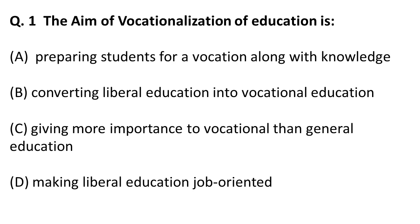The question is: what is the aim of vocationalization of education? When vocational education is mixed with general education, we call it vocationalization of education. In vocational education, you are given job training and manual skills. So making a liberal education job-oriented is the main aim of vocationalization of education.